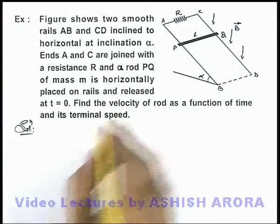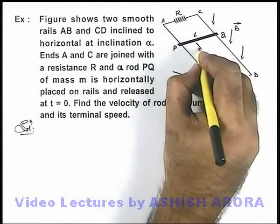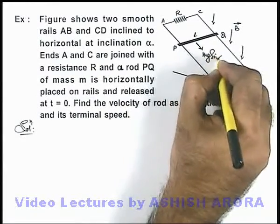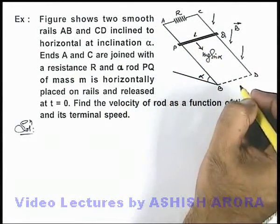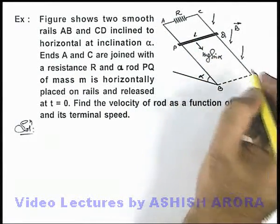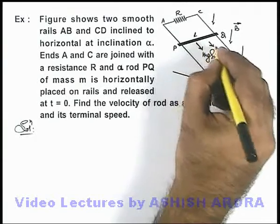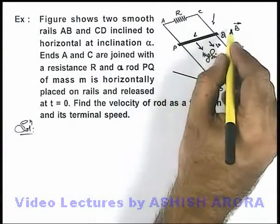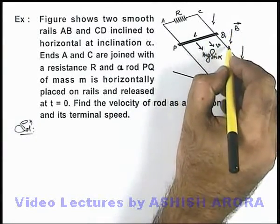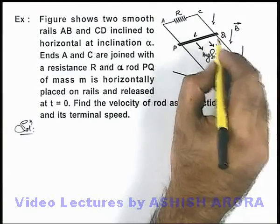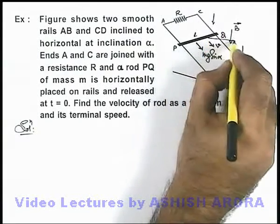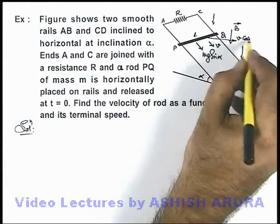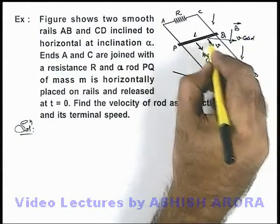When we release the rod, it will experience a downward force mg·sin(α) due to which it will start moving. At any instant, if it attains a speed v, we can see that the magnetic flux in the downward direction is cut by the horizontal component of the rod's velocity, which is v·cos(α), since this angle is alpha.